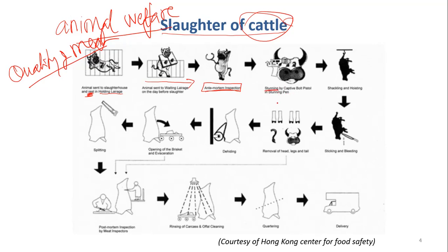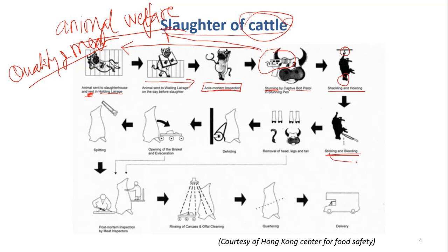Then stunning. Stunning is not to kill the animals — it's to make them unconscious so they don't feel pain in the next step. This is also because of animal welfare and the quality of the meat. The method of stunning is different from pigs — for cattle, they use a captive-bolt pistol, like a gun shot into the head to make the animal unconscious. Then the animal is hung up, and the next step is sticking and bleeding: using a knife to pierce into the neck to cut the blood vessel so the blood can be removed.